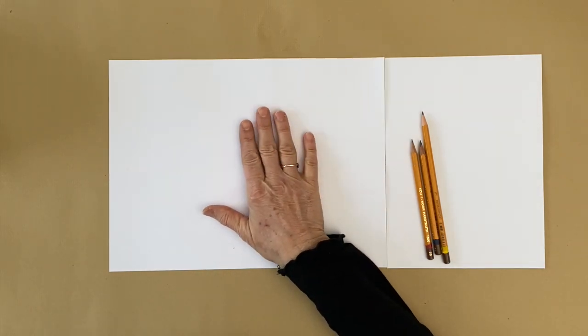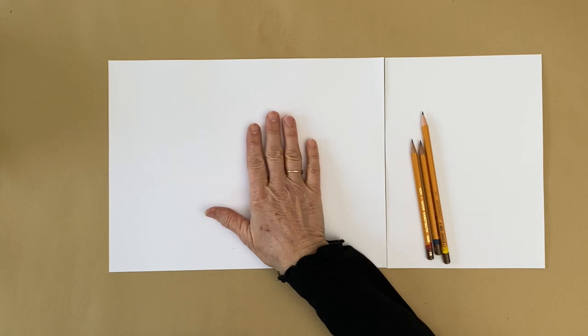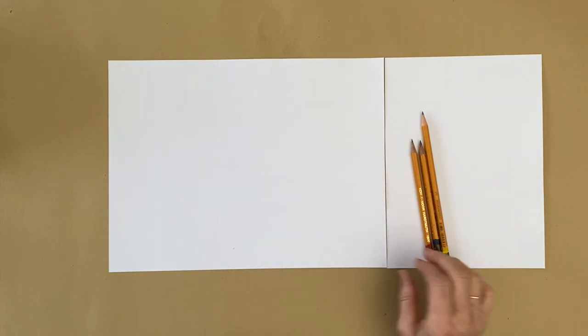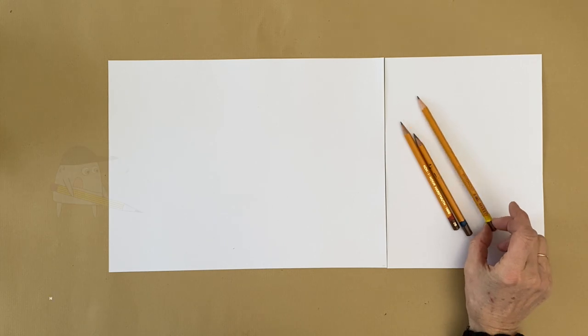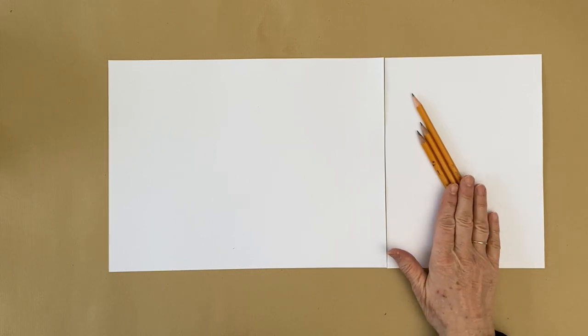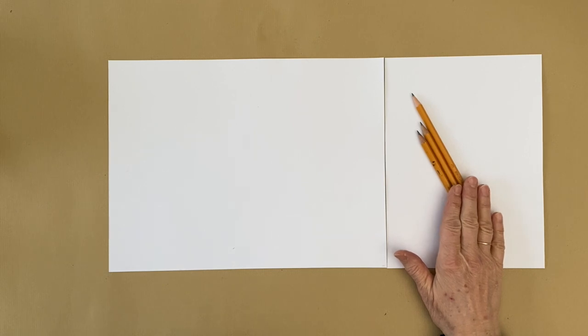So what you're going to need for our still life today is a sheet of drawing paper and if possible at all it should have a rough surface. I'm going to show you the problem with a smooth surface in a minute so this is my recommendation. Then you need three pencils again like in the first lesson which is an HB, a 2B and a 4B. You could do the whole thing with just an HB but it will be a lot more difficult.